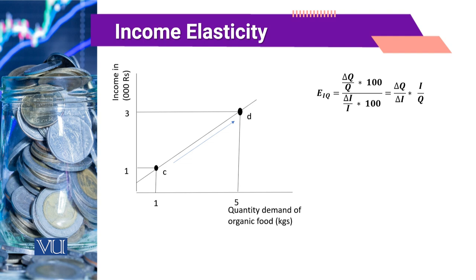We have a positively sloped curve. Point C on this curve denotes that quantity demanded is equal to 1 if income is equal to Rs. 1,000. There is another point D on this positively sloped curve, which denotes another combination where quantity demanded is equal to 5 if income of the household becomes Rs. 3,000.